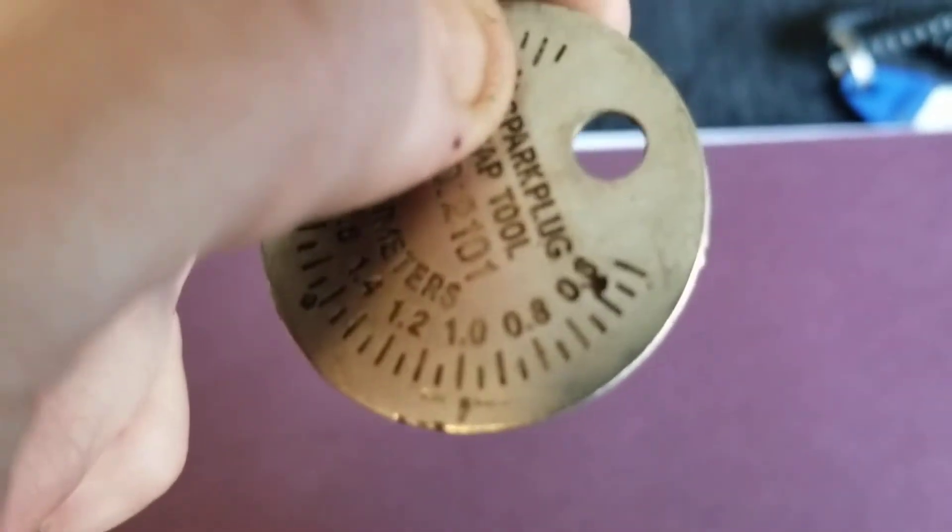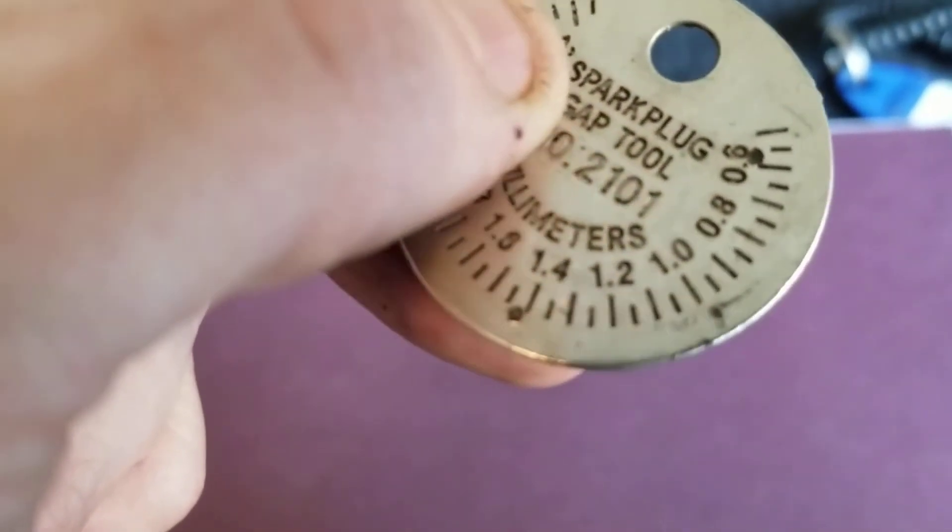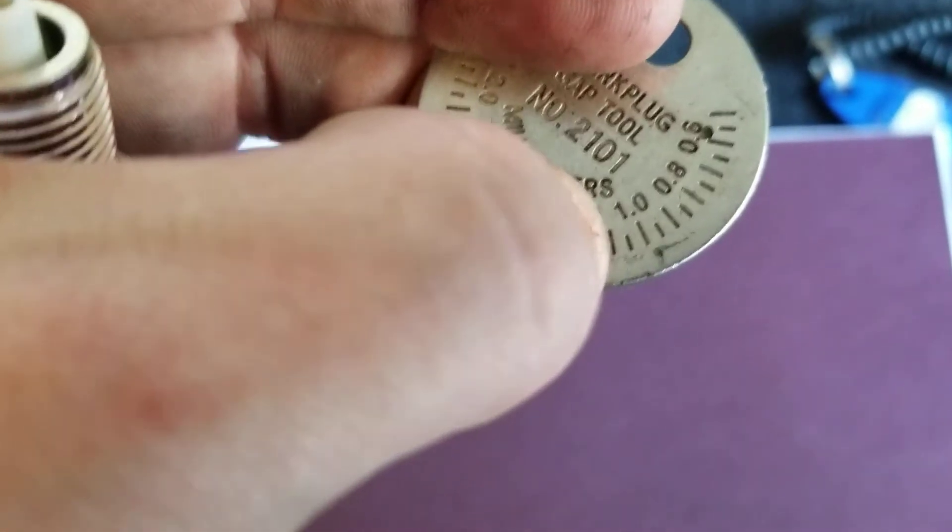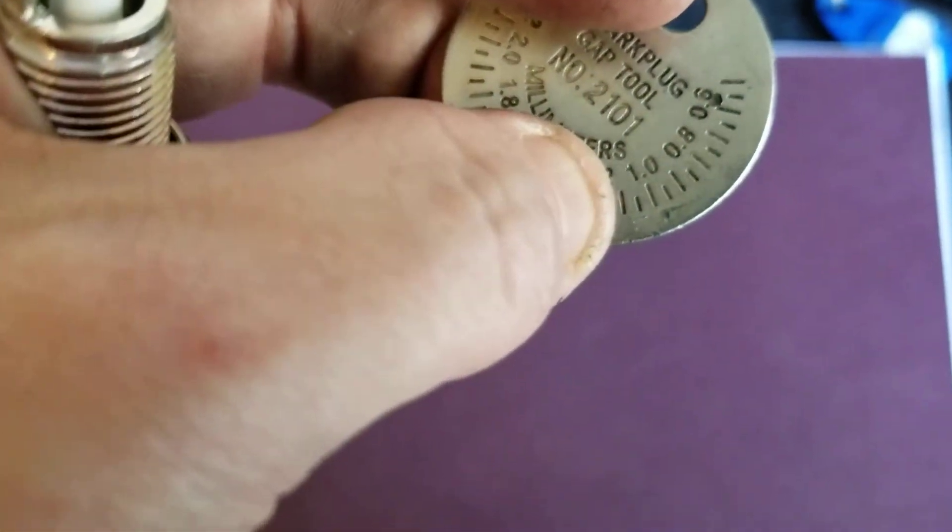As you can see, this is 0.6, 0.8, 1.0, 1.2. So I have to put it right there at 1.1 millimeters for each of the four spark plugs.